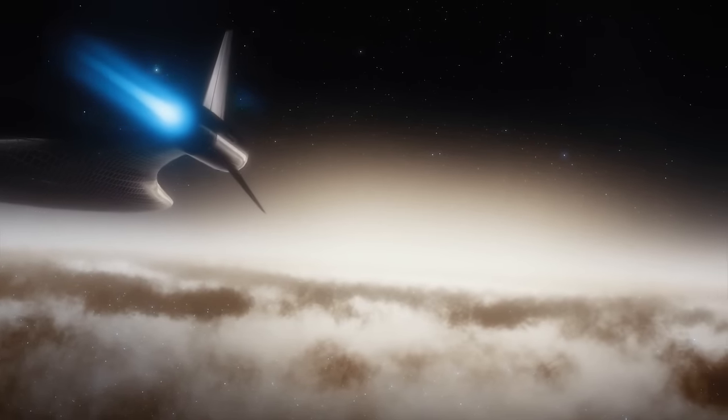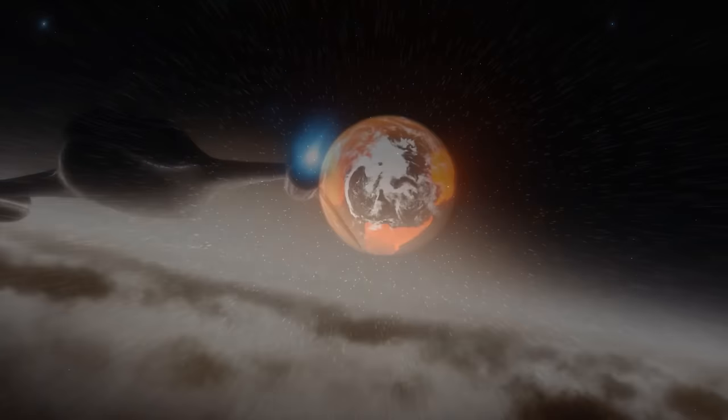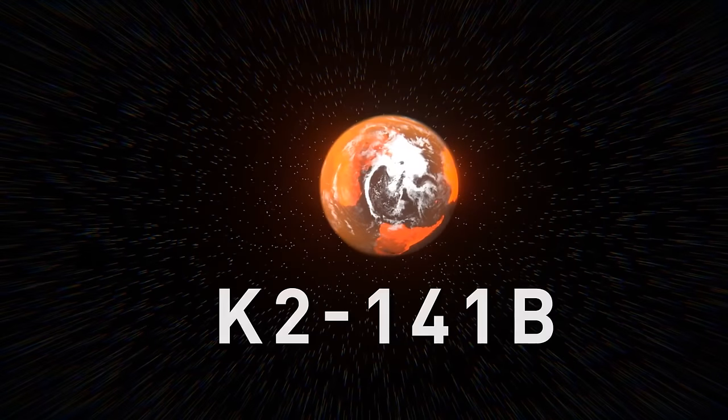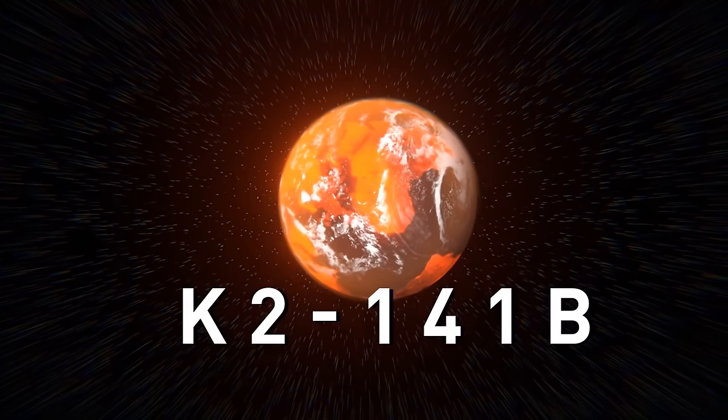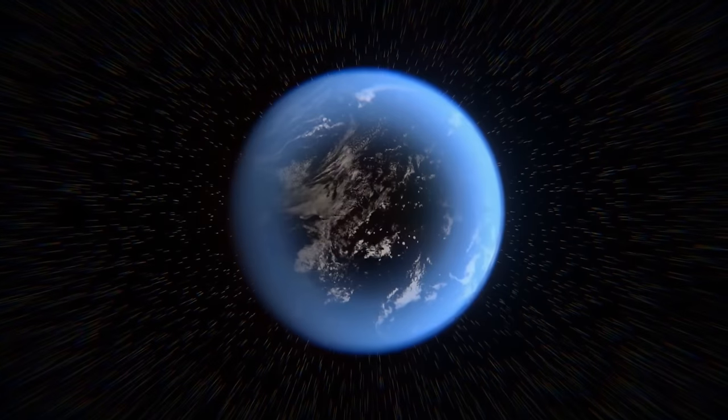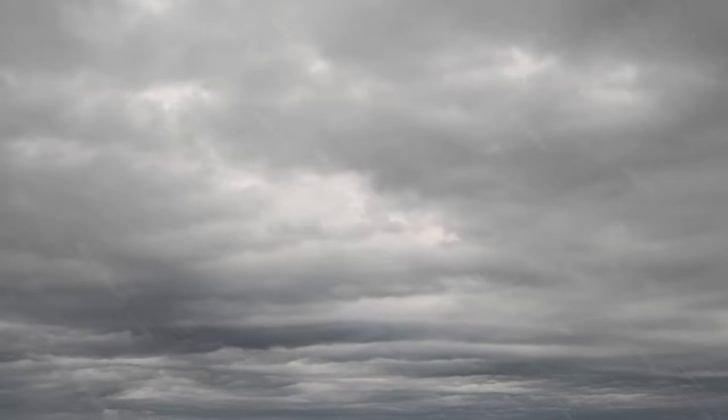During your space voyage, think twice before landing on unknown planets. Otherwise, you may end up in a place like K2-141b. That's a planet outside of our solar system. At first glance, it's not that different from Earth. It has liquid oceans that evaporate, form clouds, condense, and get back to the surface as rain. But instead of water, it rains rocks.